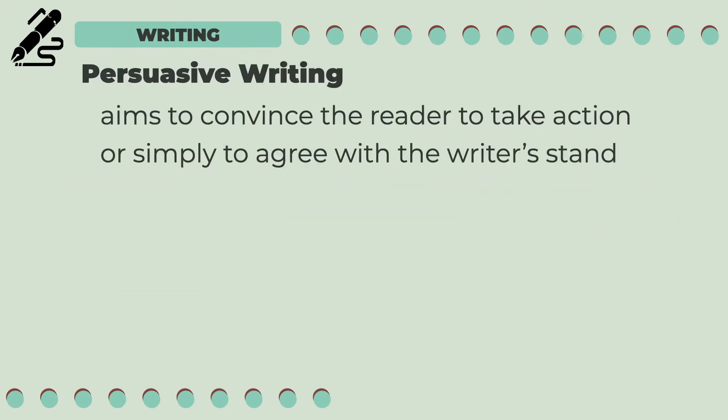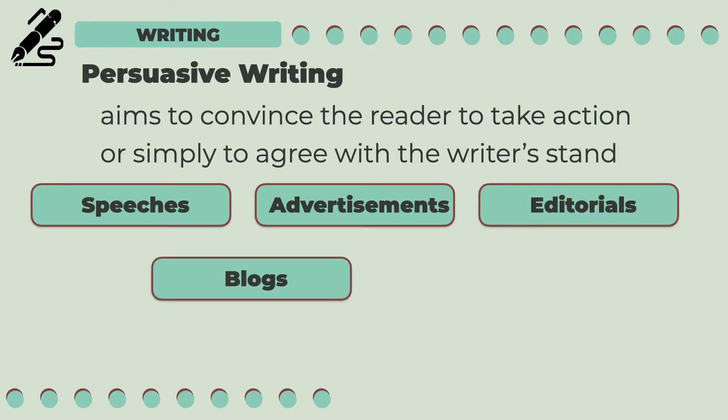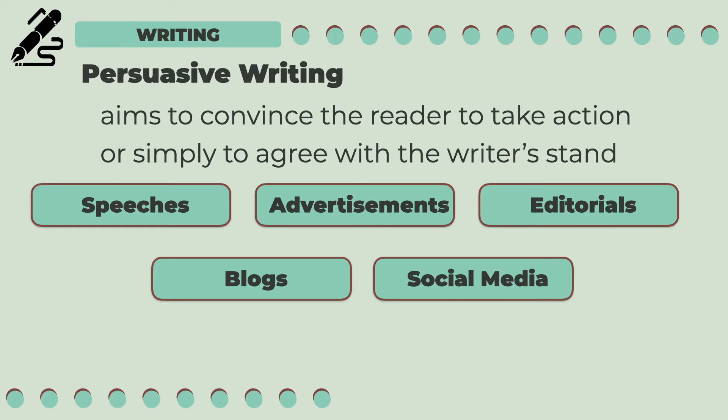In the previous video, we learned that persuasive writing aims to convince the reader to take action or simply to agree with the writer's stand. There are various types of texts that use persuasive writing, among which are speeches, advertisements, and editorials. Some articles or posts on blogs and social media may also feature persuasive writing.